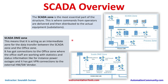The SCADA zone is the most essential part of the structure. This is where commands from operators are delivered and distributed to the actual substations. In the SCADA zone we see SCADA taking all the process data, HMIs, a time server for synchronization, a historian similar to DCS, maintenance data, and communication to the process zones.